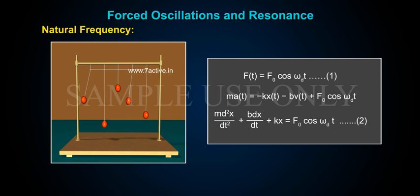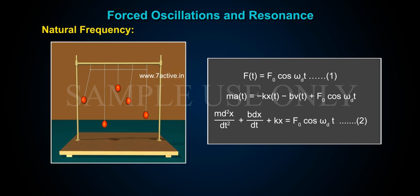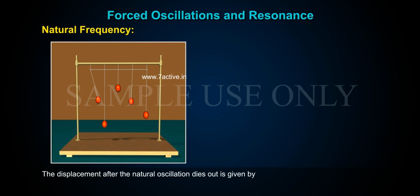This gives the differential equation: m(d²x/dt²) + b(dx/dt) + kx = F₀ cos(ωd·t) — equation two. The displacement after the natural oscillation dies out is then determined.